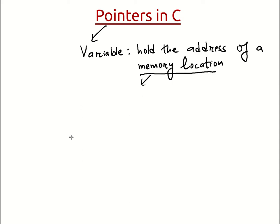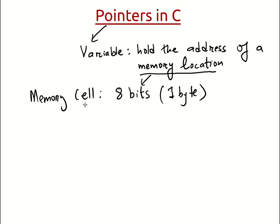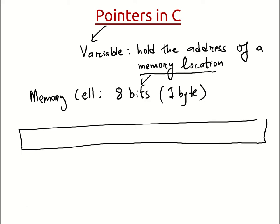Now let's talk more about memory locations. A computer's memory is composed of a collection of millions of bits. Each bit can hold two values: either 0 or 1. But accessing memory in terms of bits is not very useful because we can't store a wide range of values in a single bit. So bits are grouped together to form something called a memory cell. In a modern-day computer, a memory cell is a combination of 8 bits — so a collection of 8 bits, or 1 byte, is called a memory cell.